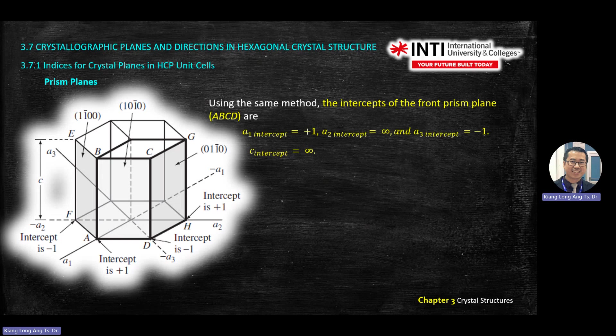We try to find the intercept for this prismatic plane. All these give you the plane of the prism. For example, this one — how you arrive at 0, 0, minus 1, 0 — it is because it's from 0, 1, 0, A.